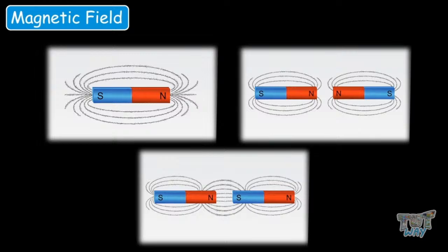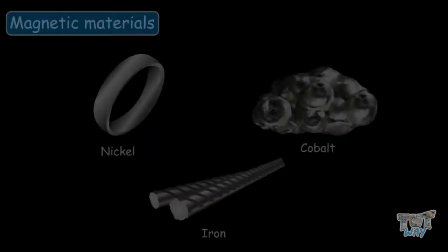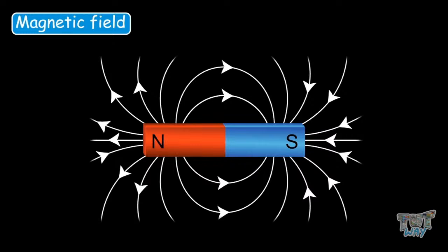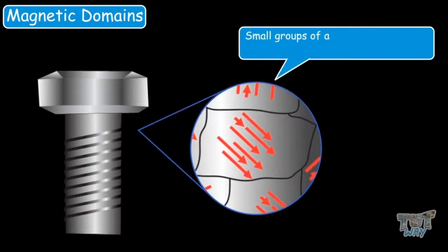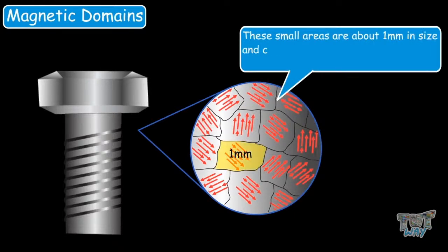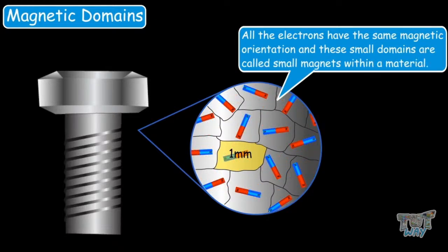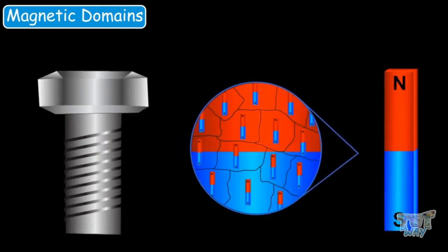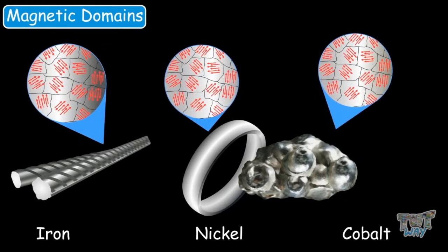This is the way we can visualize the magnetic field, which is otherwise invisible. Now we will learn the internal structure of a magnet. In magnetic materials, small groups of atoms bond together to form domains — small areas about one millimeter in size containing billions of atoms aligned in one direction, with all electrons having the same magnetic orientation. In a permanent magnet, all domains are aligned in the same direction. In magnetic materials like iron, nickel and cobalt, the domains are not aligned, but they can be aligned or magnetized to form magnets.